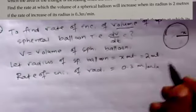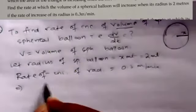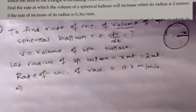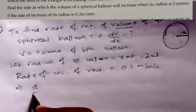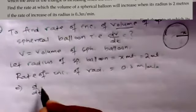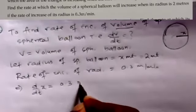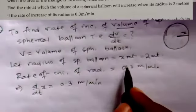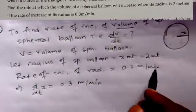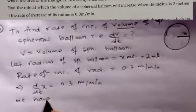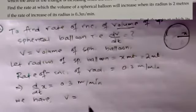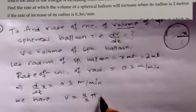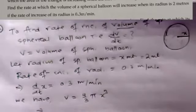The rate of increase of radius is 0.3 meters per minute. Rate of increase means derivative with respect to t, so dx/dt = 0.3 meters per minute. We need the relation between volume and radius x, which is the volume of a sphere: V = (4/3)π x³.